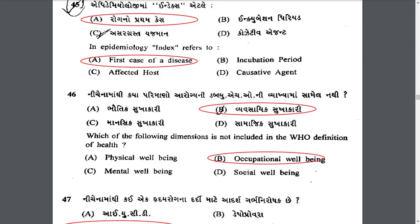Which of the following dimensions is not included in the WHO definition of health? The answer is B — occupational well-being. The definition of health according to WHO is: health is a state of physical, mental, and social well-being in which disease and infirmity are absent.